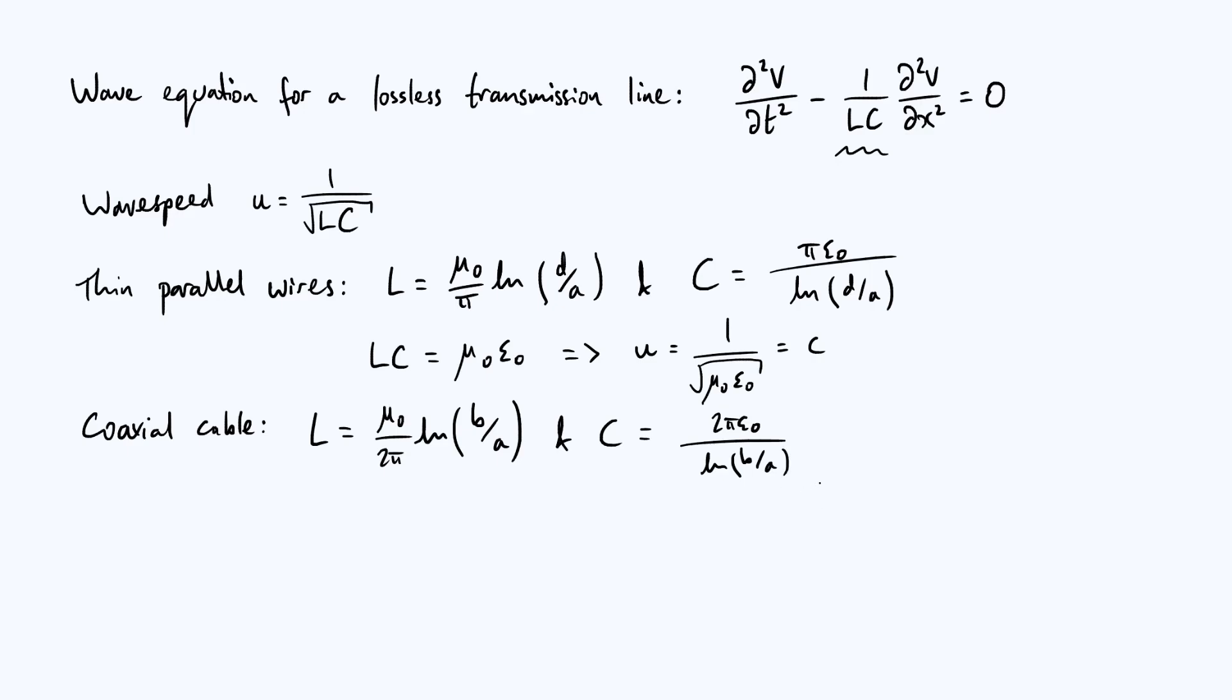And you'll notice that exactly the same thing happens. You've got the log terms on the top of L but the bottom of C, they'll cancel when you multiply them together. You've also got 2π on the top and bottom that will cancel, and you get μ₀ε₀ again.